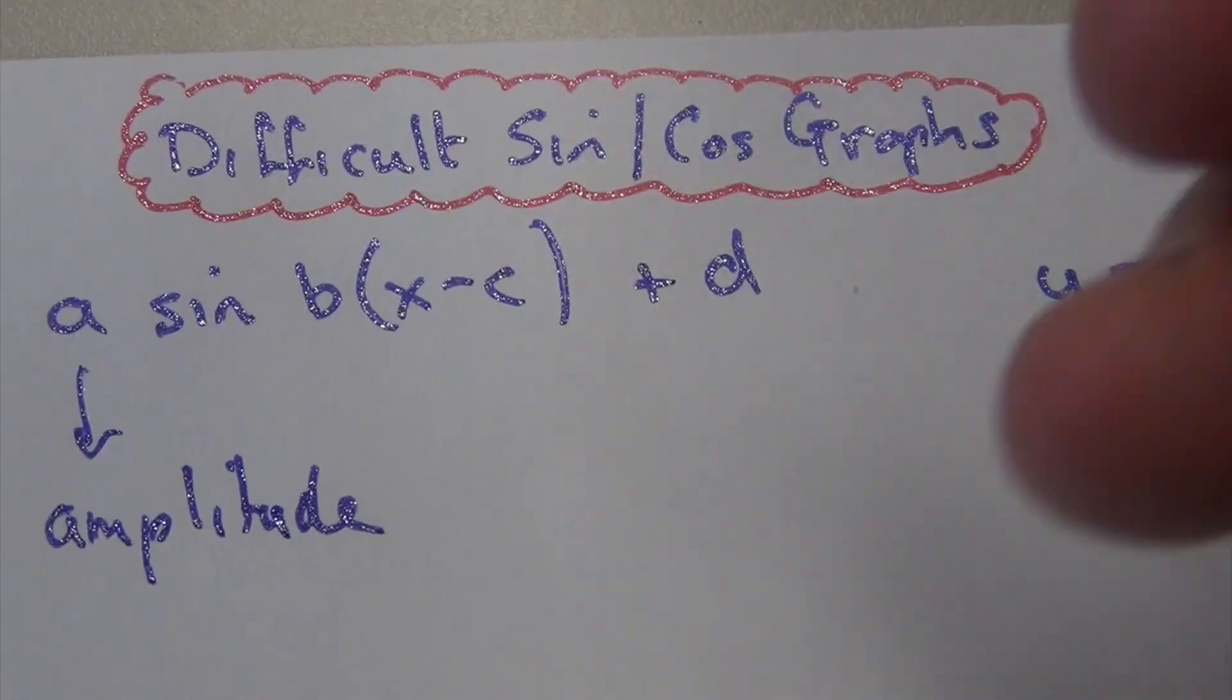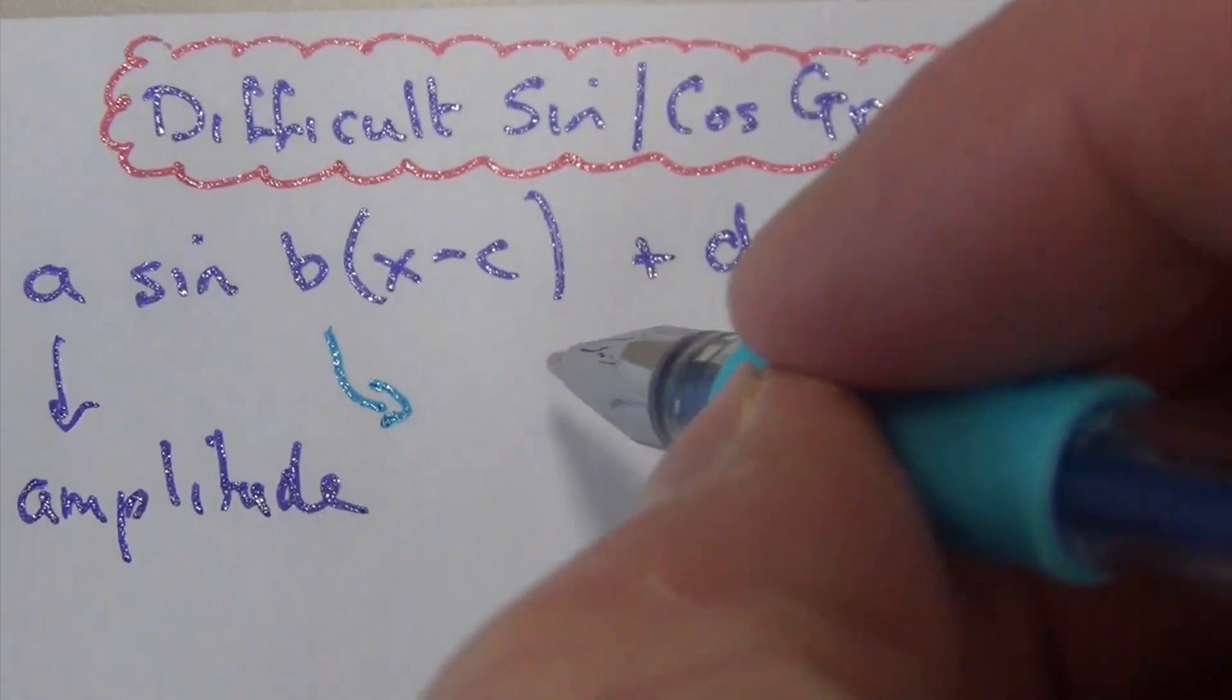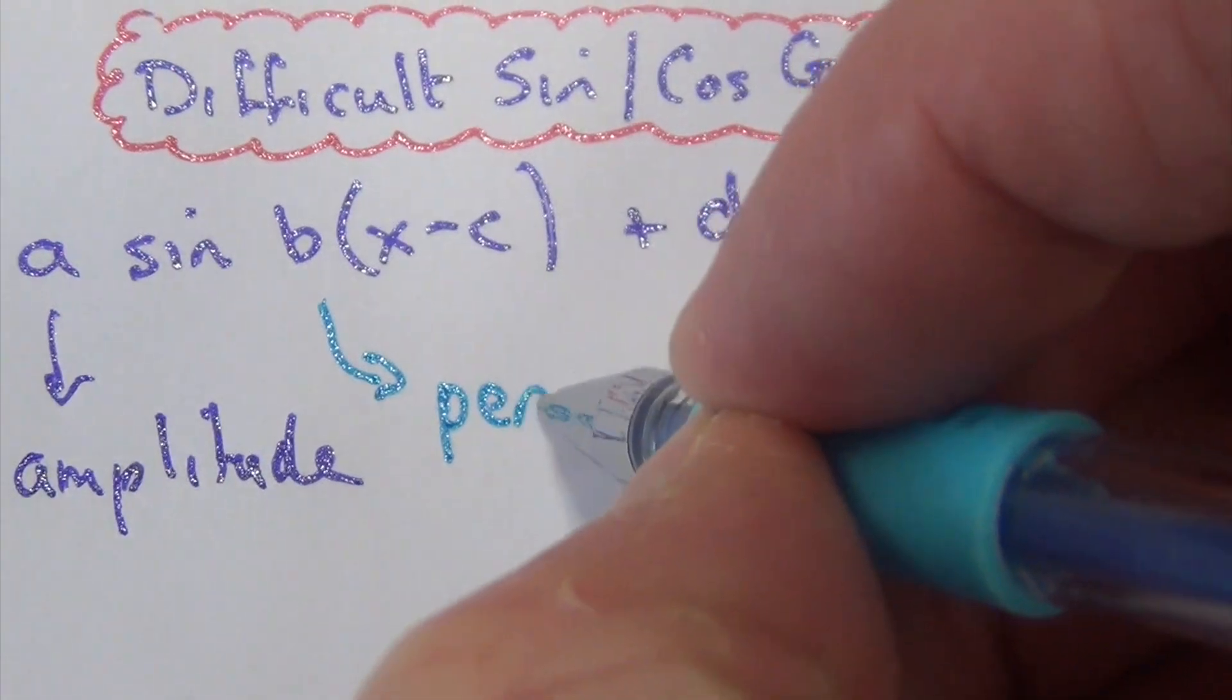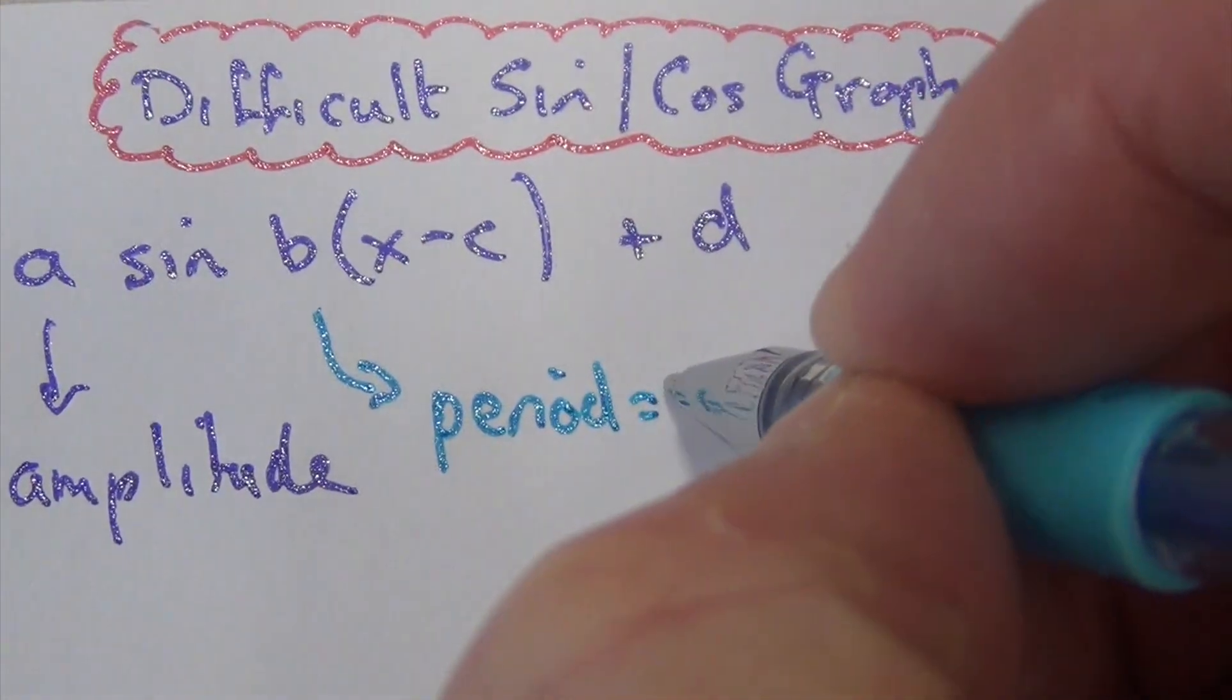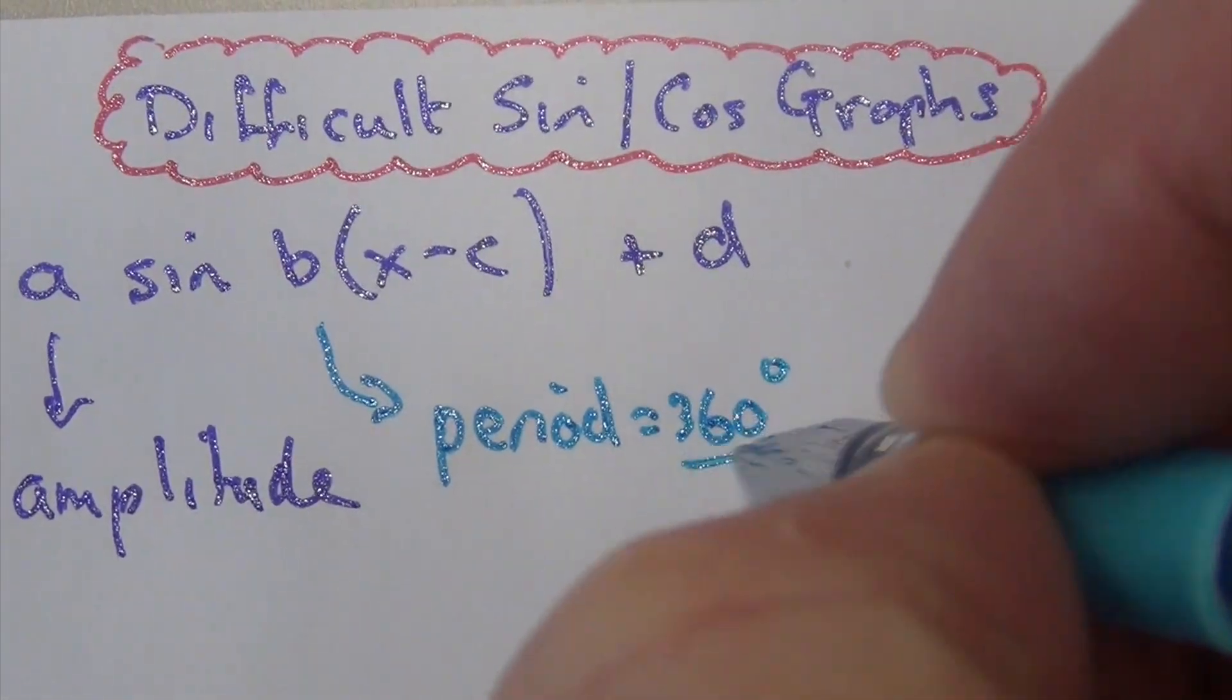A different coloured pen. B helps us find the period. We know that period equals 360 divided by the B.